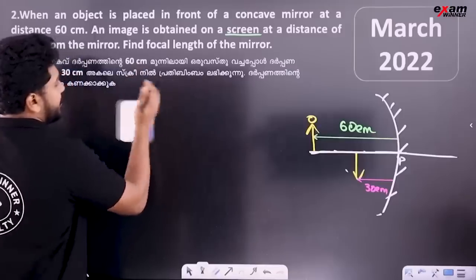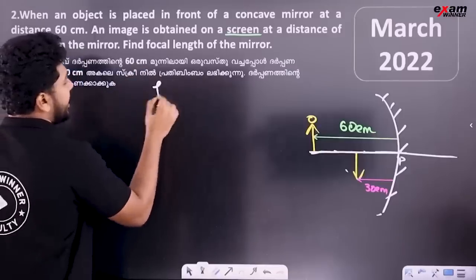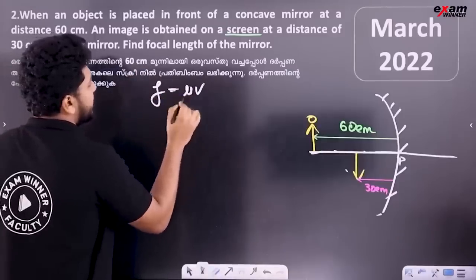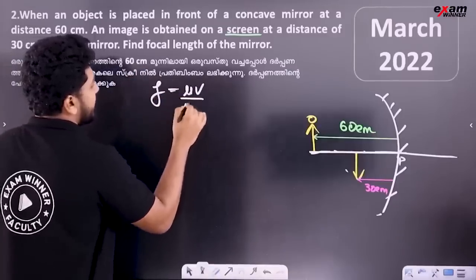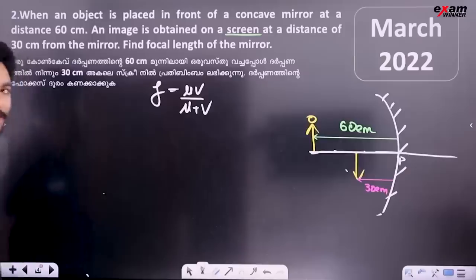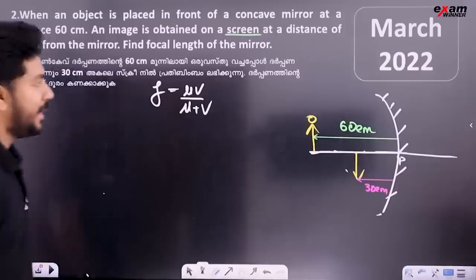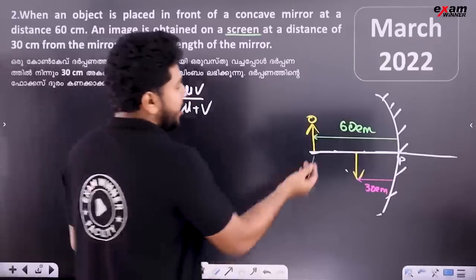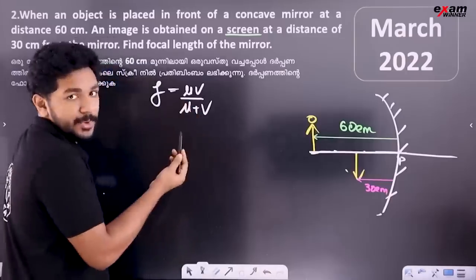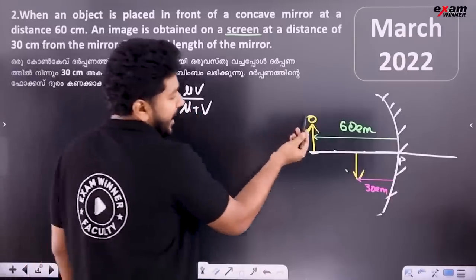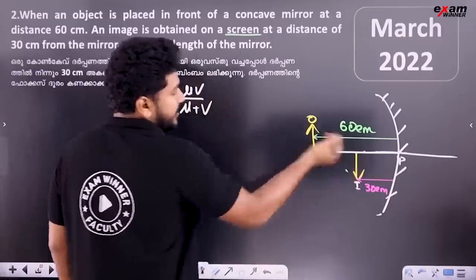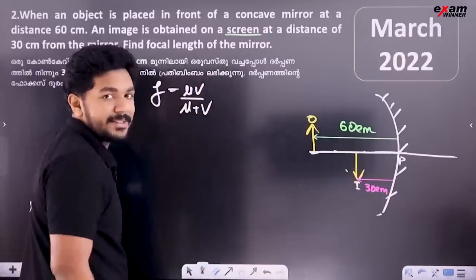F is equal to uv divided by u plus v. The object distance is 60 cm, so the object value is the same.